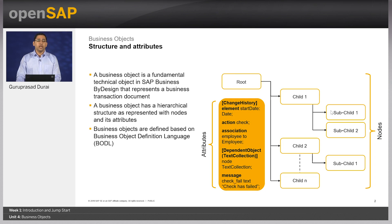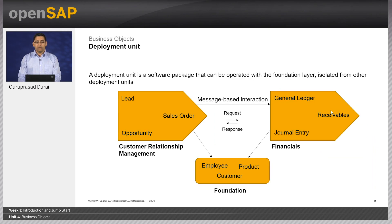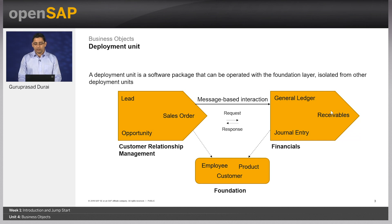Standard business objects can be extended, which will be covered in week 3. Now let us look at the deployment unit. A deployment unit is a piece of software that can be operated within the foundation layer or isolated from other deployment units. SAP Business by Design is organized into multiple deployment units based on application areas, for example customer relationship management, supply chain management, financials, etc. The foundation deployment unit is where master data resides, like the employee, the product, or the customer. Business objects that are part of the foundation deployment unit can be accessed directly from other deployment units.